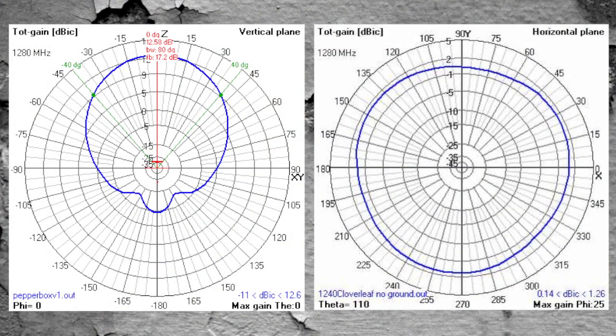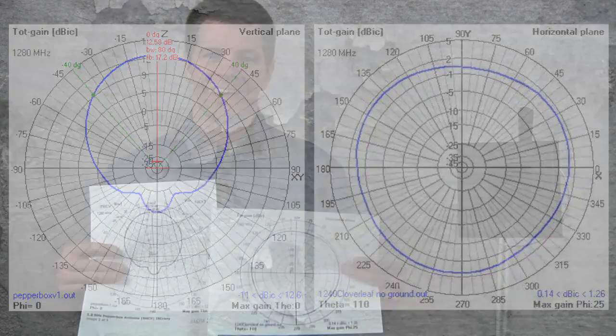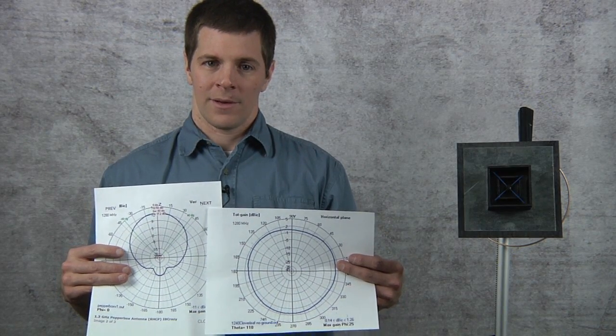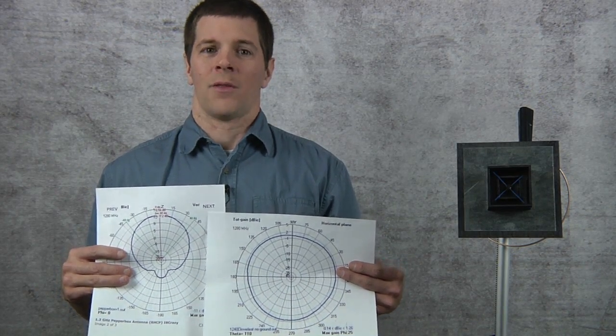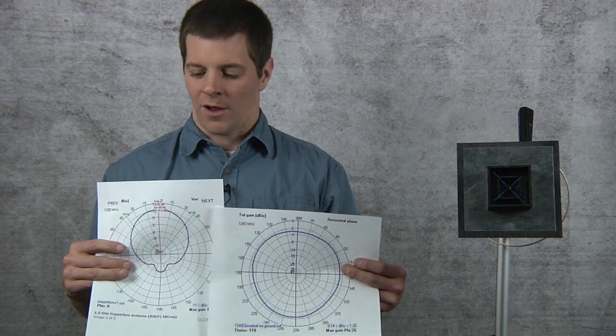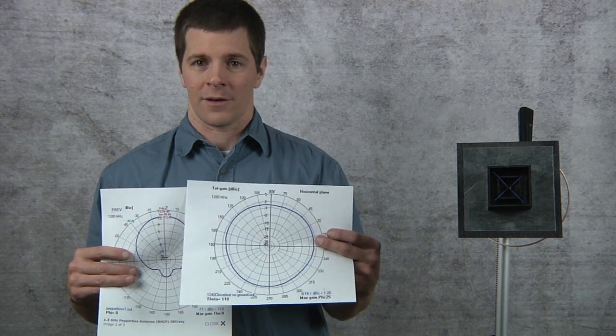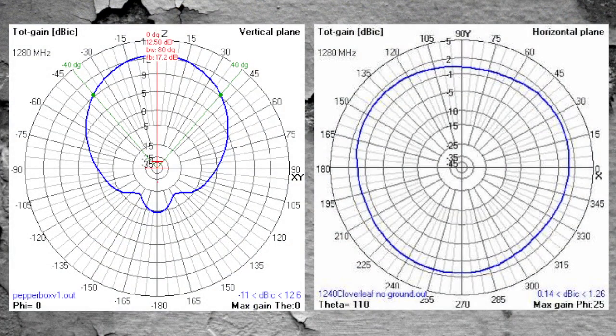These are basic radiation plots. On your left, you see the radiation plot of the Pepperbox. On the right is the Cloverleaf. The antenna position is dead center in the middle of the cross. Well, at first glance, you can tell the Pepperbox reaches out a lot further in one direction, but not very well in the other. But it appears, if you look at the Cloverleaf, like the Cloverleaf has better coverage.